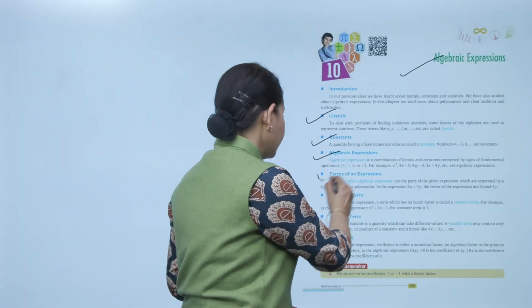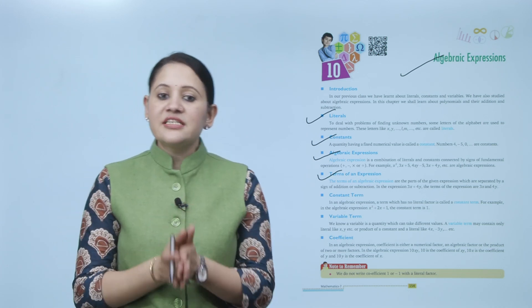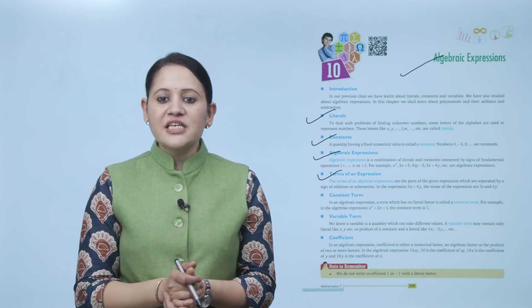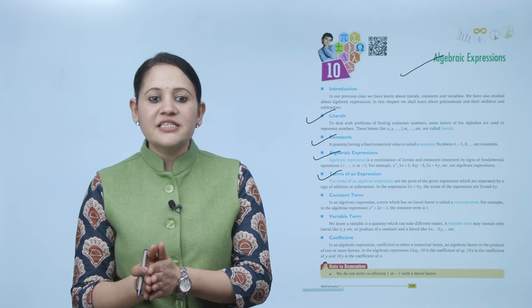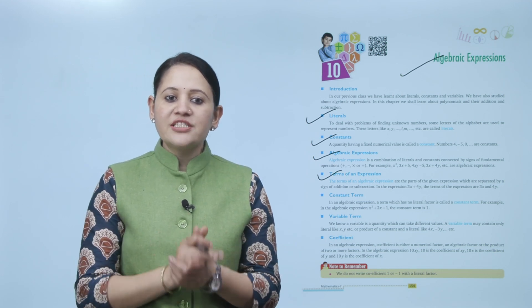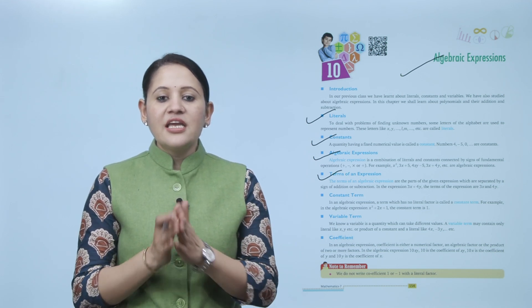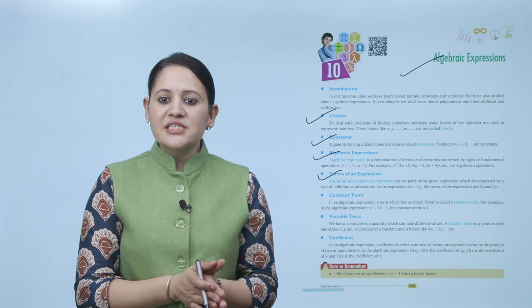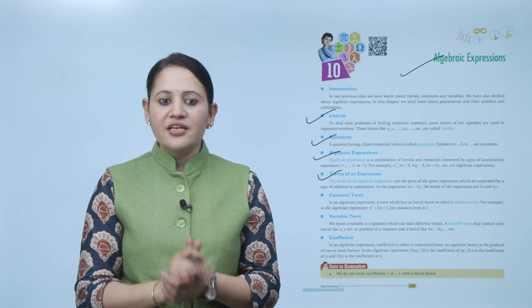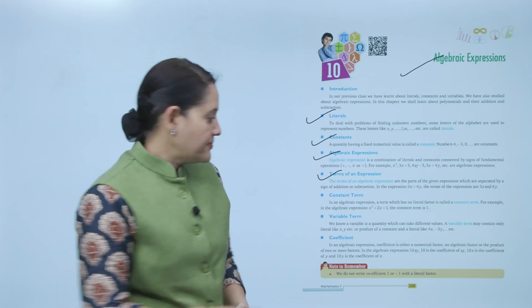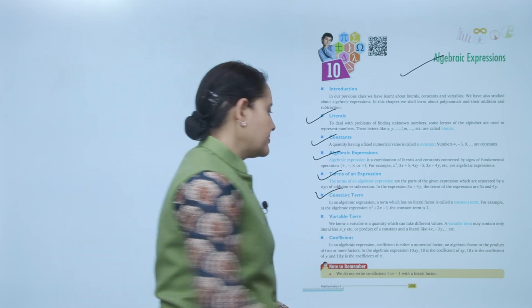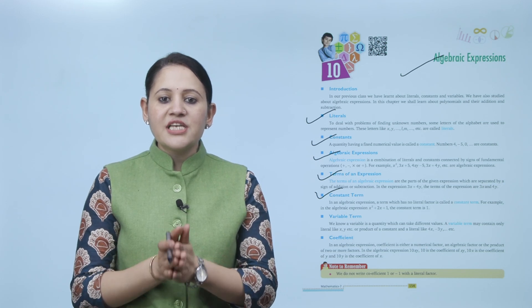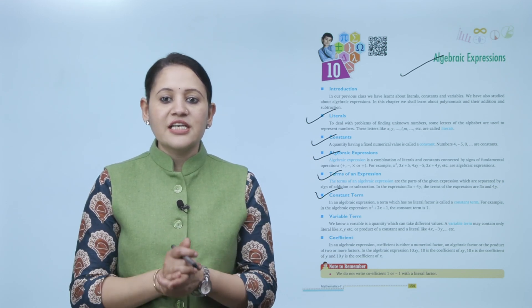Next is terms of an expression. The terms of an algebraic expression are the parts of the given expression which are separated by a sign of addition or subtraction. In the expression 3x + 4y, the terms of the expression are 3x and 4y.